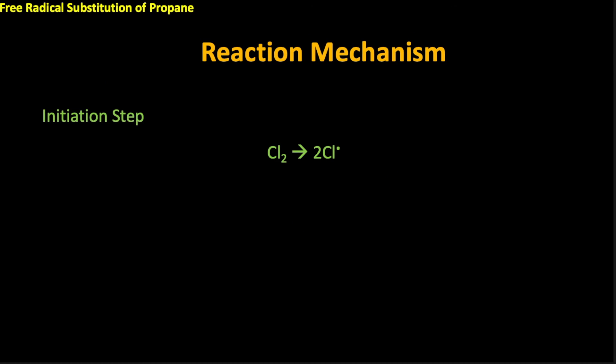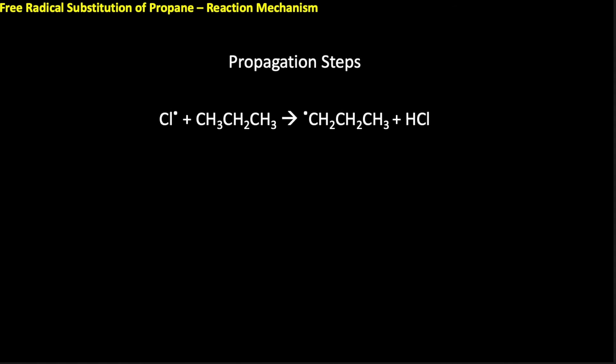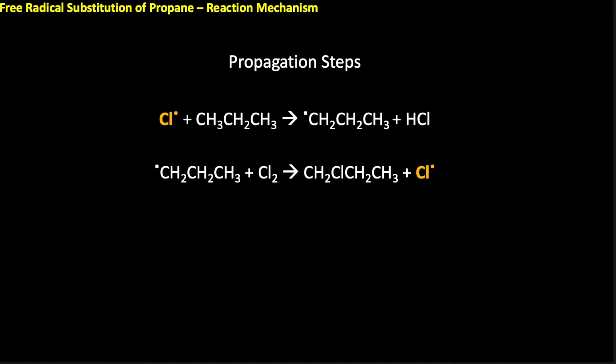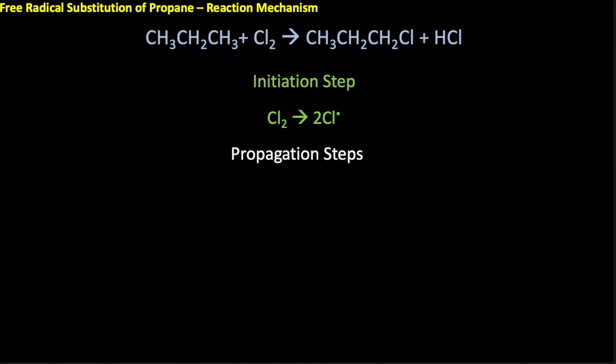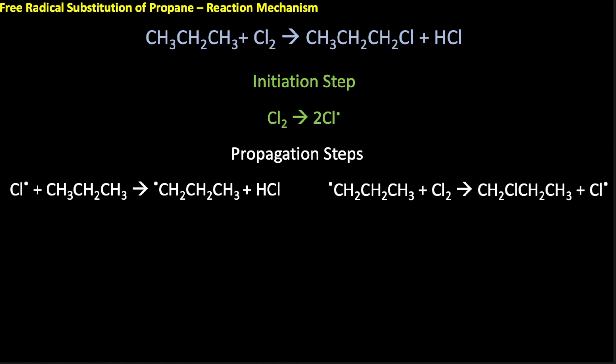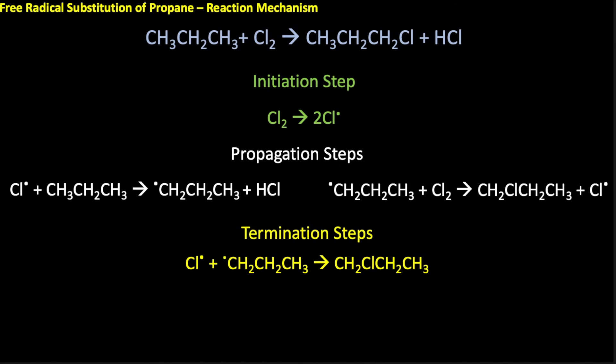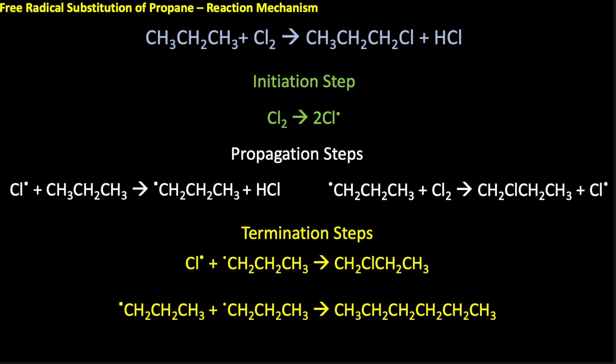Initiation is similar to before. For propagation to make 1-chloropropane, the chlorine free radical takes a hydrogen from the first carbon, regenerating a chlorine free radical. The two products are created in the propagation steps. The full mechanism includes initiation, propagation, and termination — termination could involve the chlorine free radical meeting a propyl free radical to give 1-chloropropane, or two propyl free radicals reacting together to give hexane.